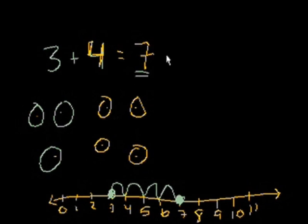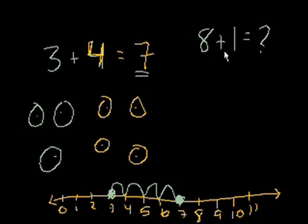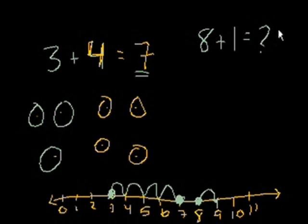We could do a couple of different ones. What if I asked you what 8 plus 1 is? You might already know it — plus 1 is just the next number. But if we look at the number line, you start at 8 and you add 1. So 8 plus 1 is equal to 9.